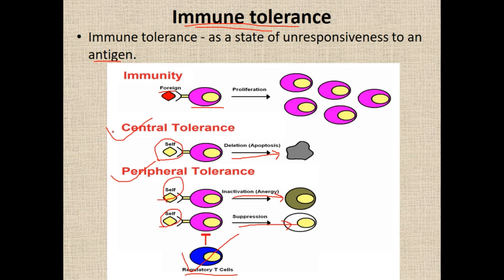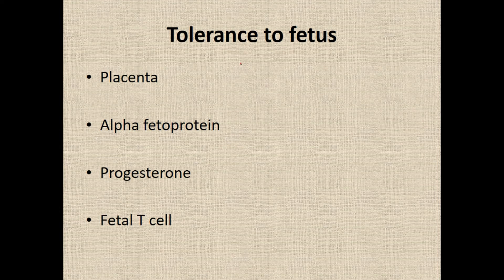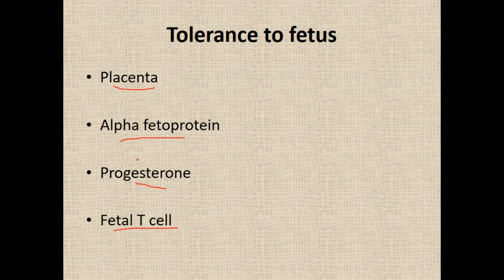Immune tolerance is of two types: central tolerance and peripheral tolerance. Tolerance to the fetus involves placenta, alpha-fetoprotein, progesterone, and fetal T cells. For the mother, the baby is also a foreign material, but still there is tolerance to the fetus. In normal cases, the maternal immune system cannot generate an immune response against the fetus.